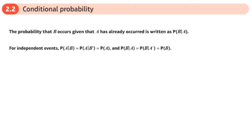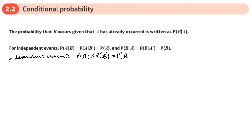This is section two of chapter two in the Year 2 Applied book on conditional probability. This section is entitled conditional probability. In the previous section we had a reminder about independent events — when things are independent, to find their probability you just do the probability of A times the probability of B.